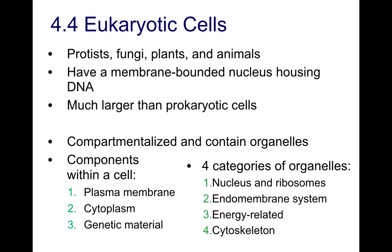There will be a number of structures for us to go through in regards to eukaryotic cells, but we can classify them into four main categories. Firstly, the storage of genetic material and processing it into something useful — and this would be proteins. Secondly, the membrane systems within the eukaryotic cells. Thirdly, energy production and use. And finally, the cytoskeleton, which provides the structure for our eukaryotic cells.